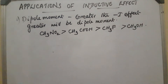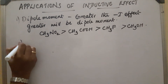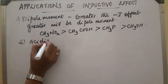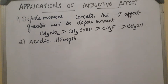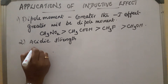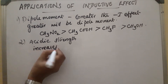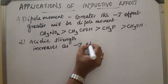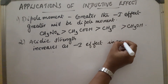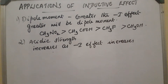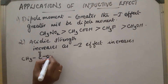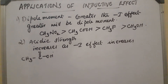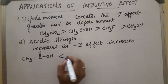Second point: acidic strength. Acidic strength increases as the minus-I effect increases. For example, starting with CH3COOH — when one H is replaced by Cl, the minus-I effect increases.